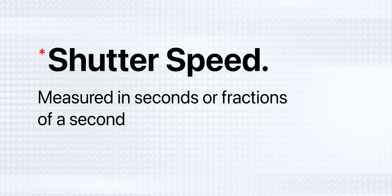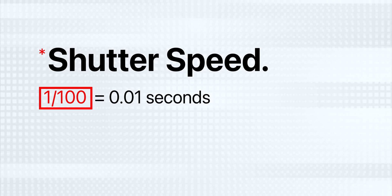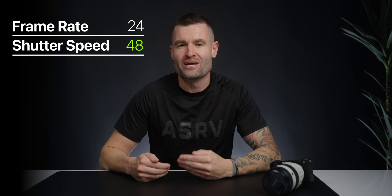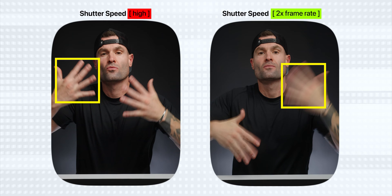Fast moving subjects are going to appear a lot sharper when we're using a faster shutter speed. Shutter speeds are measured in seconds or fractions of a second — for example, 1/100 is equivalent to one one-hundredth of a second, or 0.01 seconds. That's how long the sensor is being exposed to light. For video specifically, if we want to maintain natural motion blur, we want our shutter speed to be as close to double our frame rate as possible. This helps us avoid that jittery mess when shutter speed is too high, and for video, the shutter speed is essentially locked at double the frame rate, so we can't use it freely for exposure like in photography.